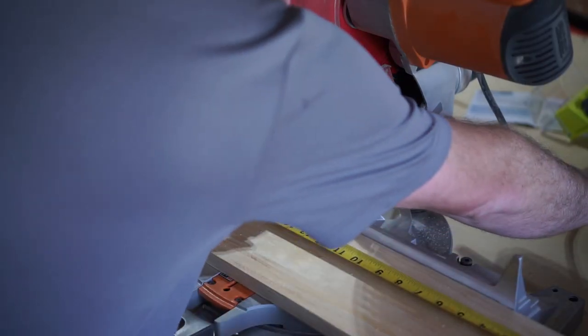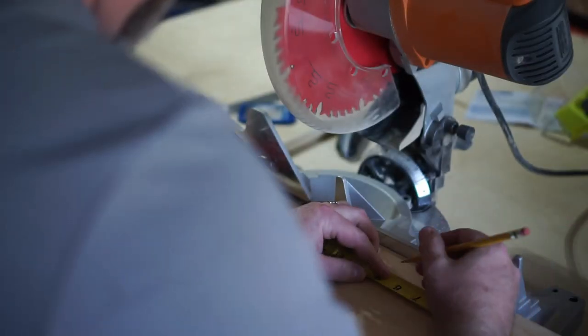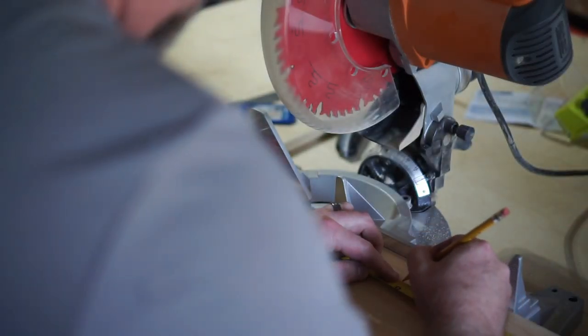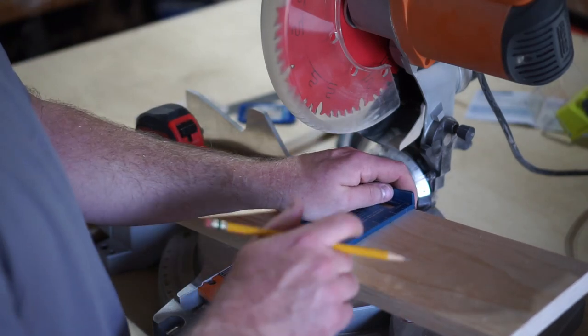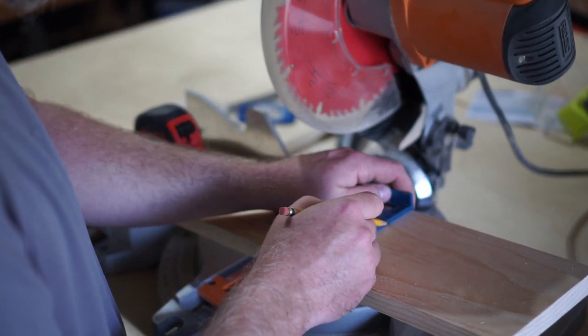So the first cuts that we're going to make are to make the two end pieces that the handle goes through. We'll cut the 1x6 and make two 8-inch long pieces out of 1x6 material.